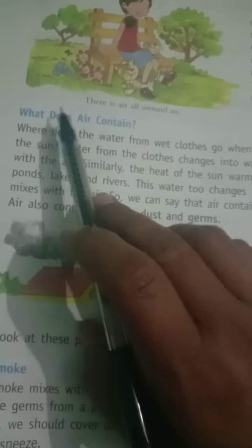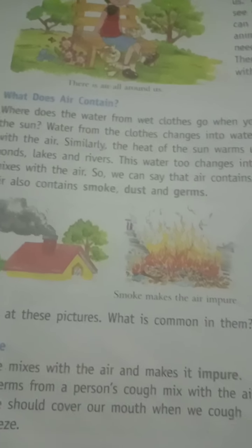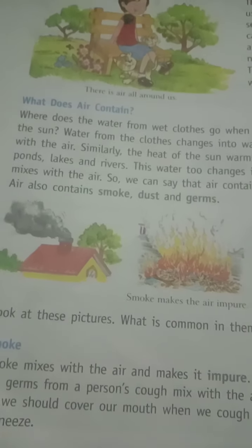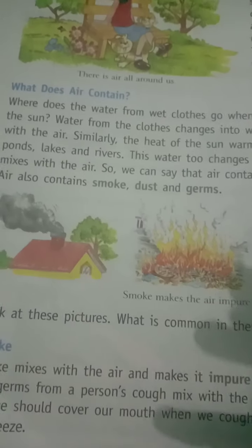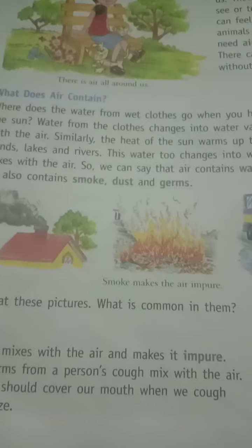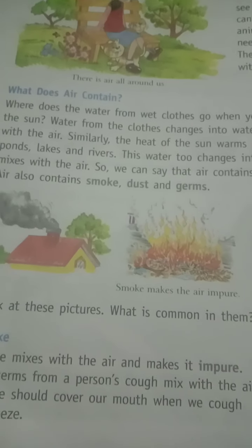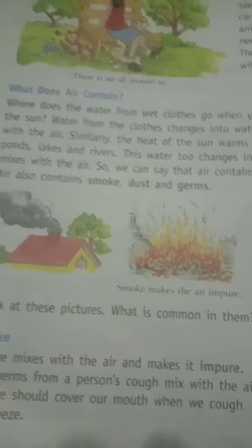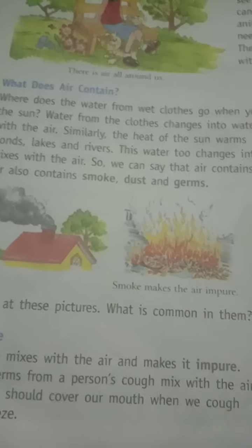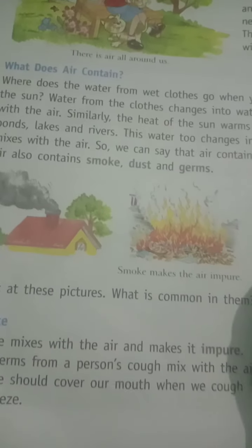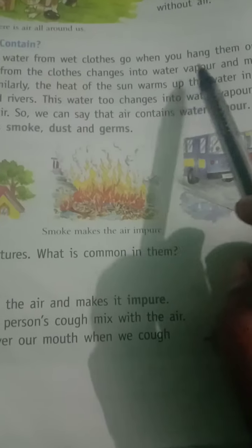So now, let's see what does the air contain. Where does the water from wet clothes go when you hang them out in the sun? We put clothes out in the morning and by evening they are dry. The water from the clothes changes into water vapors.